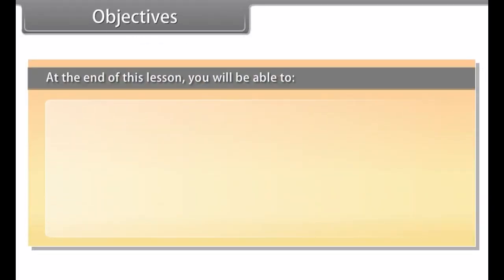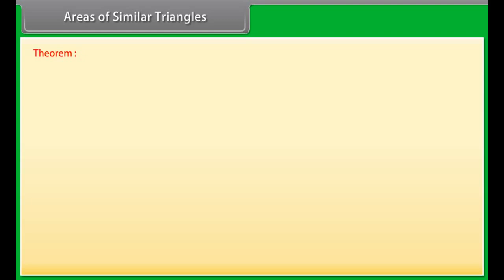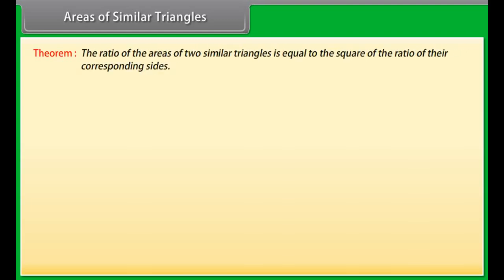Objectives: At the end of this lesson you will be able to calculate areas of similar triangles, state and prove Pythagoras theorem, and solve questions based on Pythagoras theorem. Areas of similar triangles theorem: The ratio of the areas of two similar triangles is equal to the square of the ratio of their corresponding sides. Let us prove this theorem.